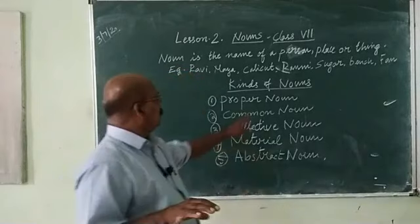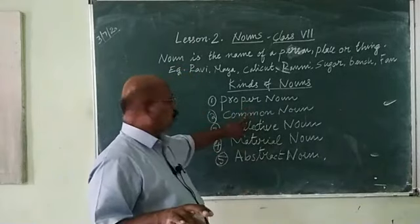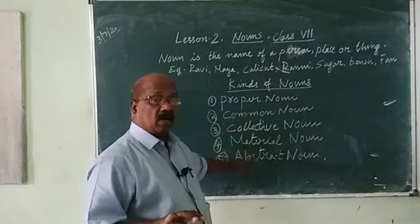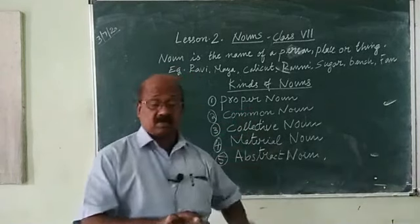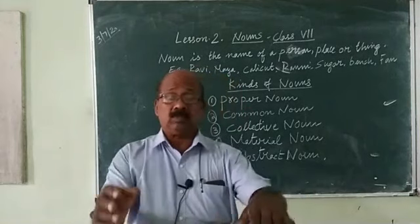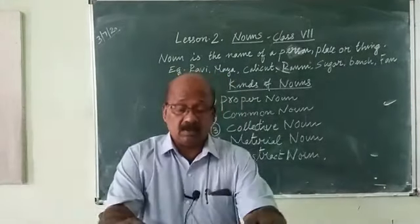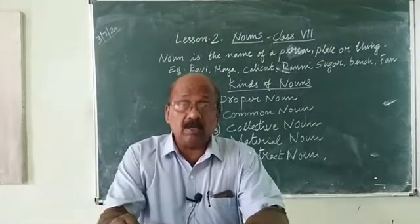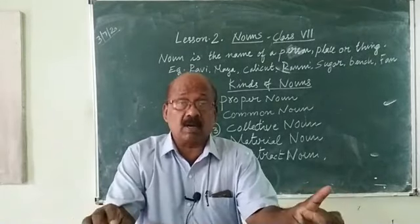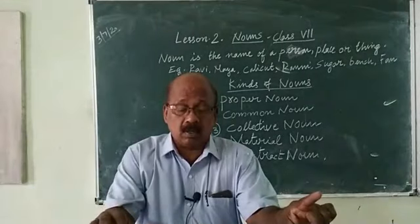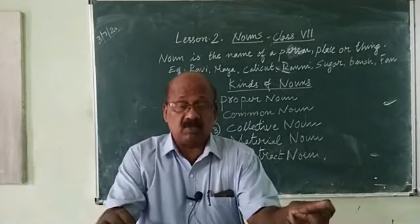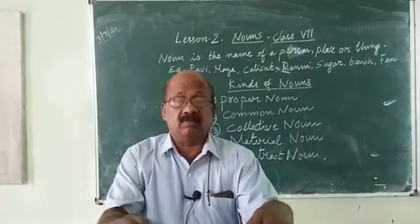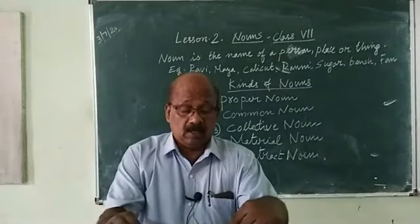So, once again: the proper noun, common noun, collective noun, material noun, and abstract noun. Now, we see the nouns one by one. Kinds of nouns: proper noun, common noun, collective noun, material noun, and abstract noun. The first one — proper noun.